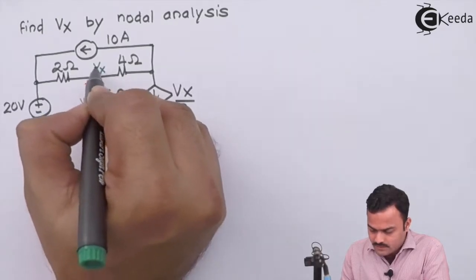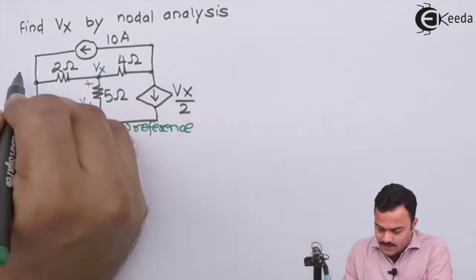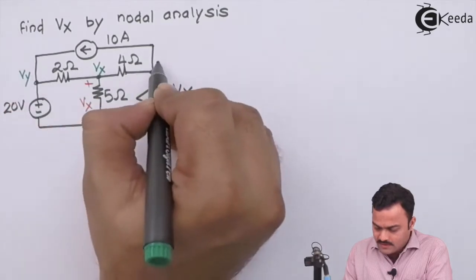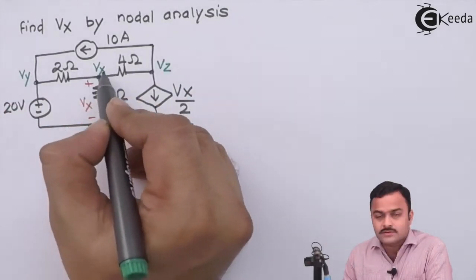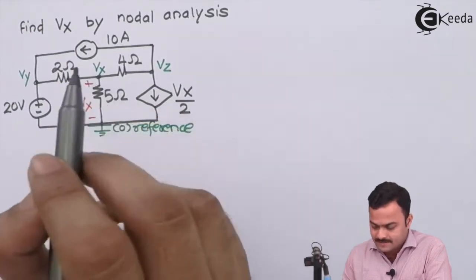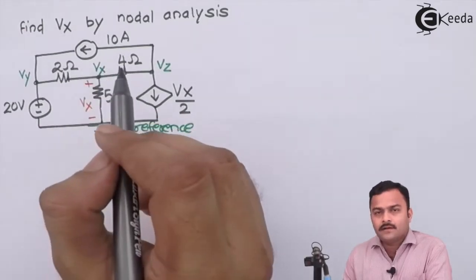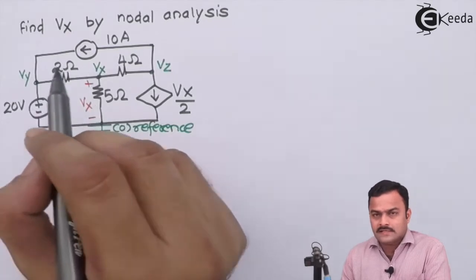If you see carefully over here, five ohm is connected between this node and a reference, so automatically Vx will be nothing but the node voltage for this node. Let's mark this as Vy and this as Vz. Our objective is to get the node voltage for this node, which is nothing but Vx.